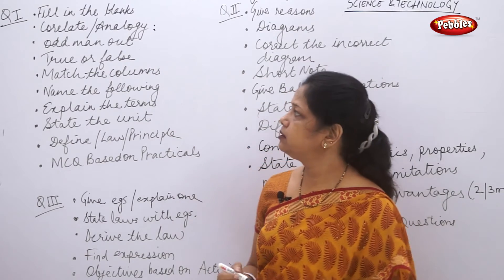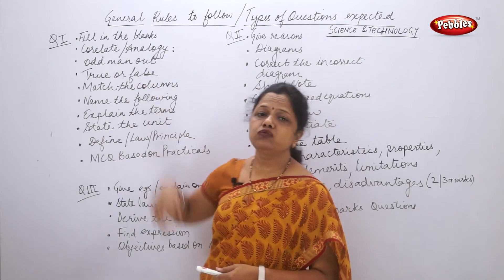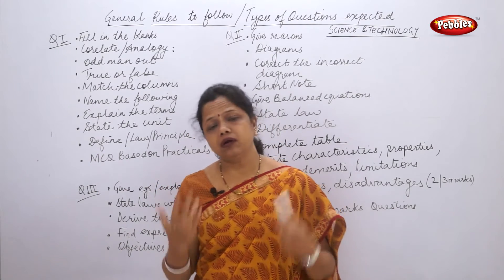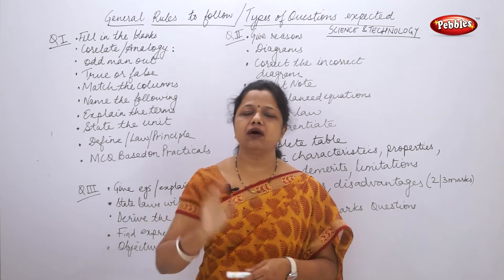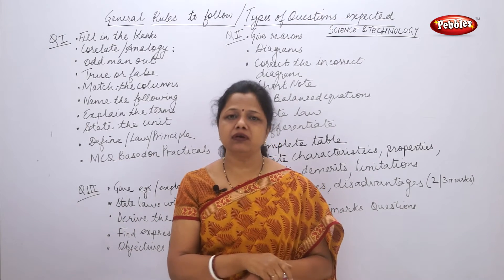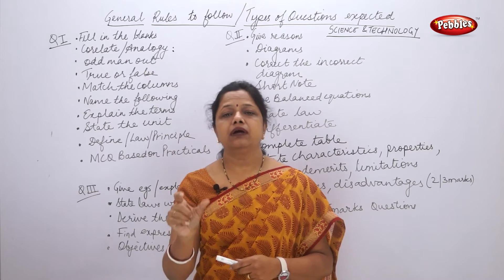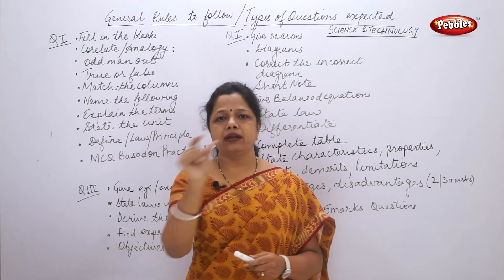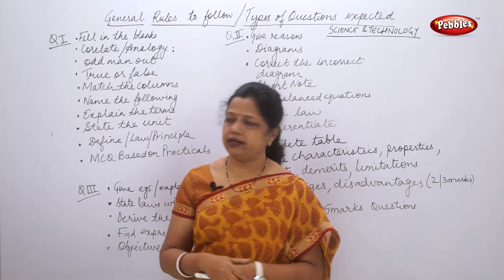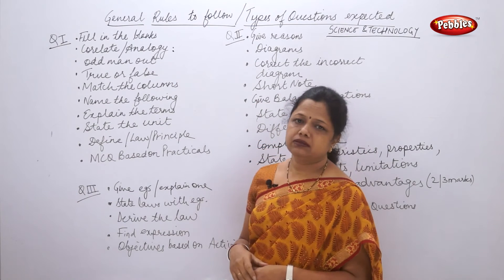For 'find the odd man out' questions — once you have found the answer in your mind, first write the sentence or the words given. Then on the next line write 'The odd man out is —' followed by a dash and the answer. Your presentation should always be correct.